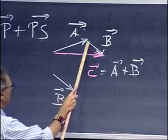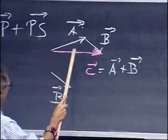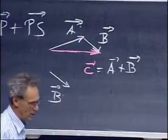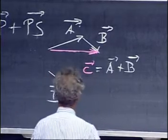It doesn't matter whether you take B, the tail of B, to the head of A, or whether you take the tail of A and bring it to the head of B. You'll get the same result. There's another way you can do it, and I call that the parallelogram method.